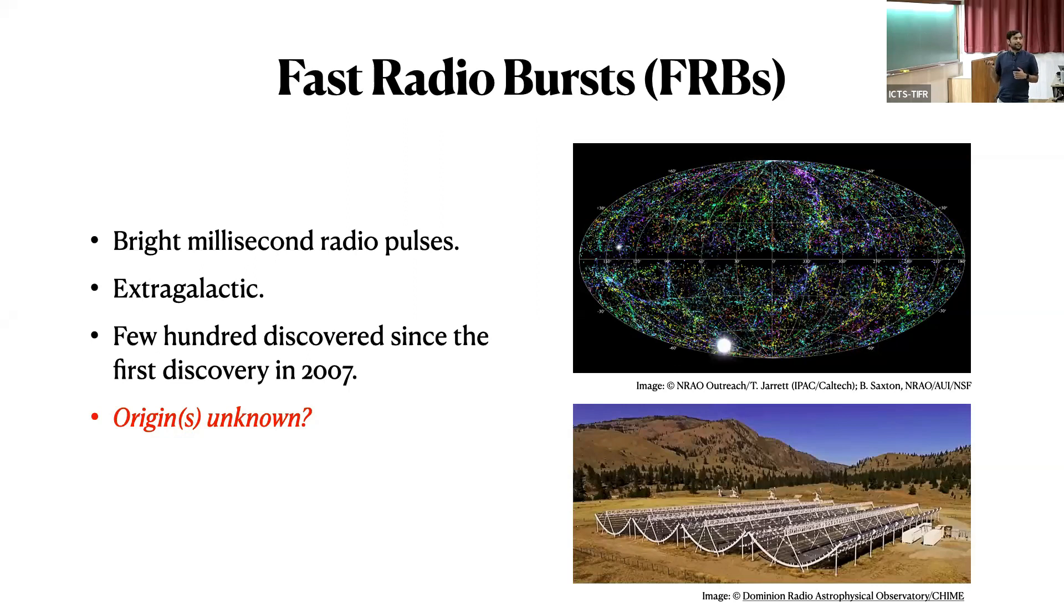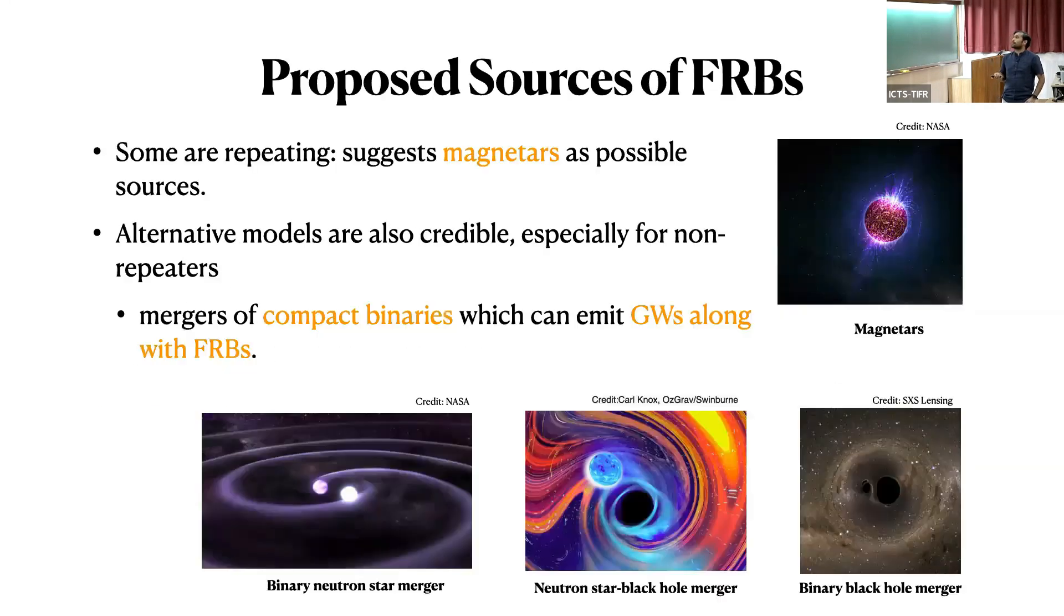So the very first guess was that there are some aliens which are shooting these laser pulses. But you can rule that out with the simple isotropy of these sources. One of the proposed sources are magnetars, which are nothing but rotating highly magnetized neutron stars.